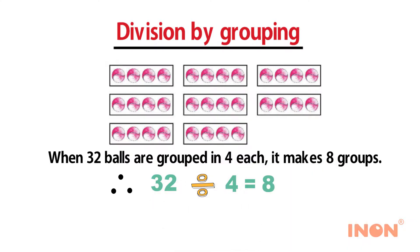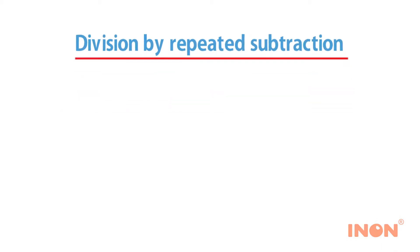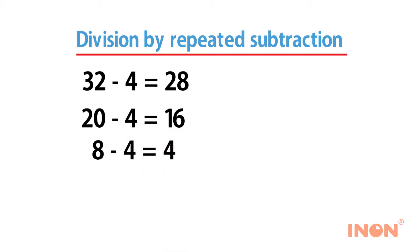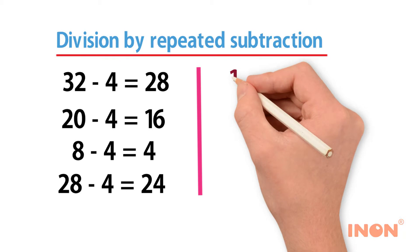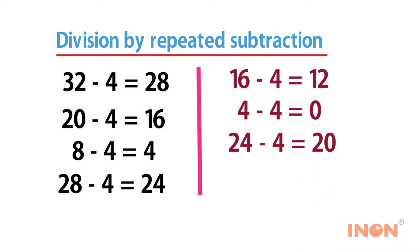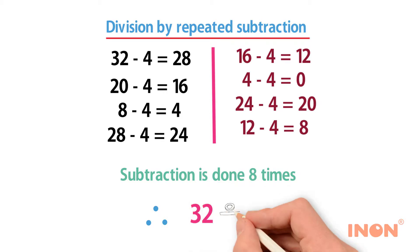Division by repeated subtraction: 32 minus 4 is 28, 28 minus 4 is 24, 24 minus 4 is 20, 20 minus 4 is 16, 16 minus 4 is 12, 12 minus 4 is 8, 8 minus 4 is 4, 4 minus 4 is 0. Subtraction is done 8 times, therefore 32 divided by 4 is equal to 8.